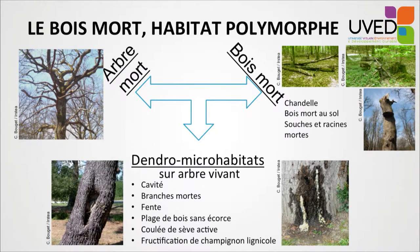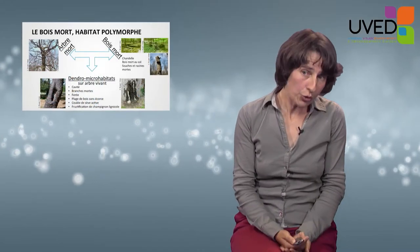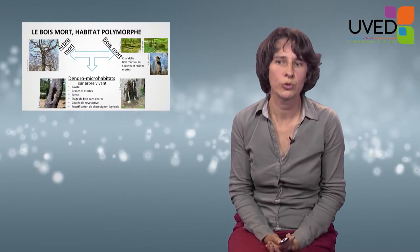Dead wood also makes up microhabitats. Dead branches on a tree may provide microhabitats. A dead tree can carry dendro microhabitats: cavities, dead branches, bark that comes off the tree, splits, or sap.